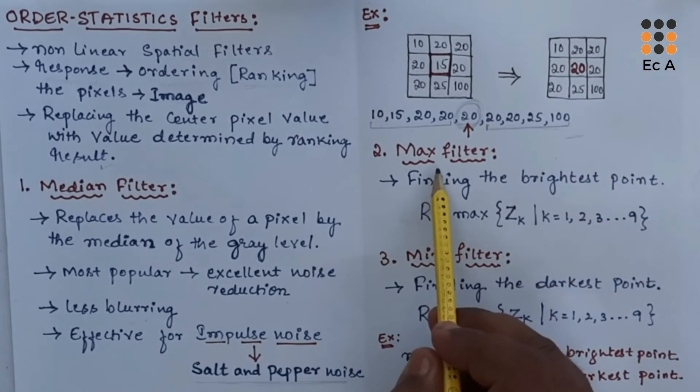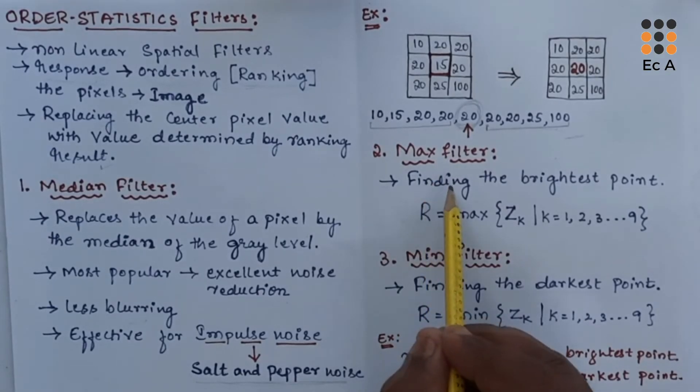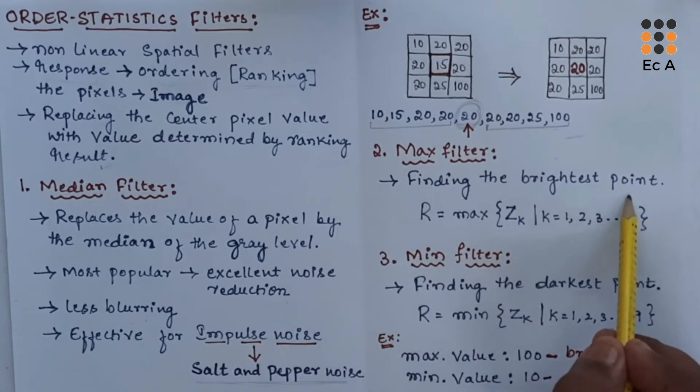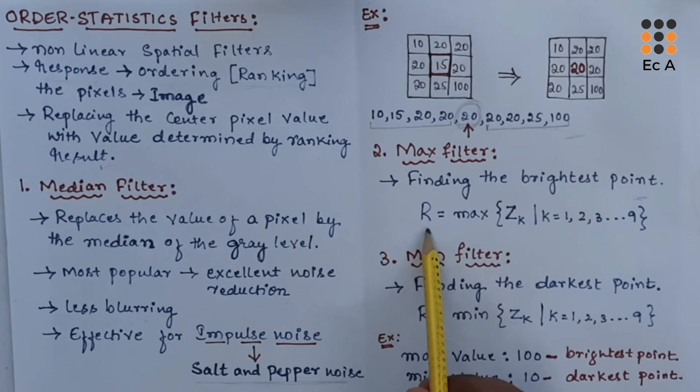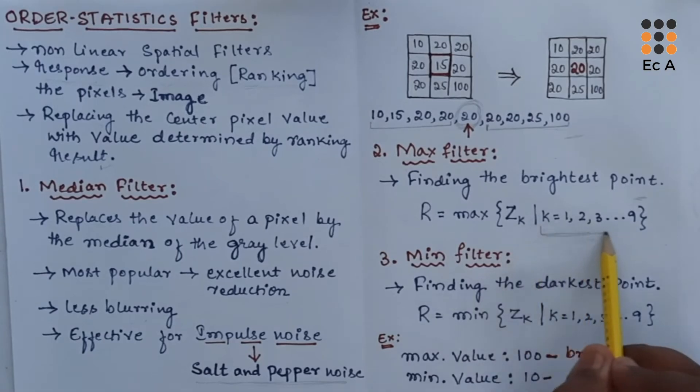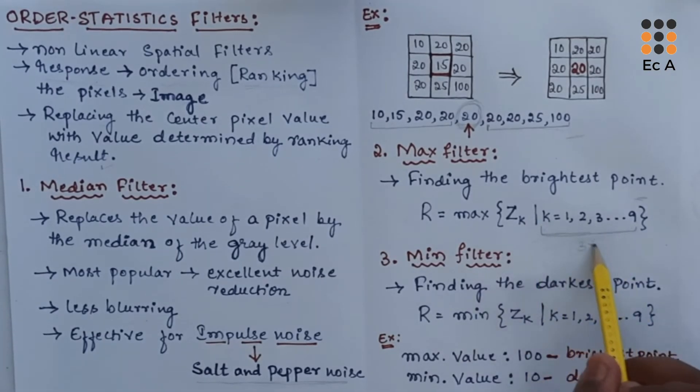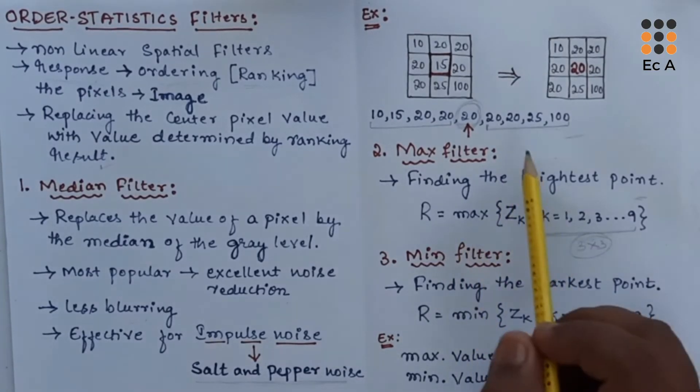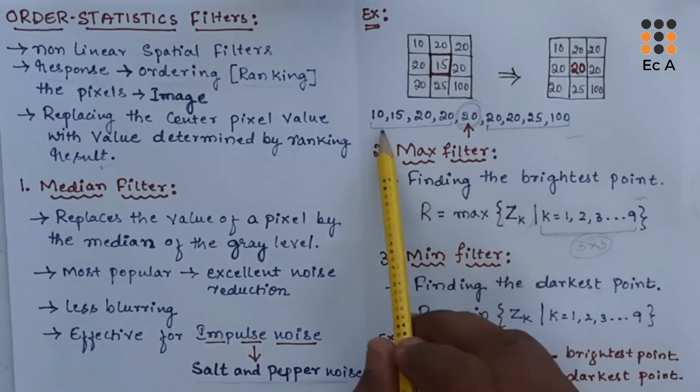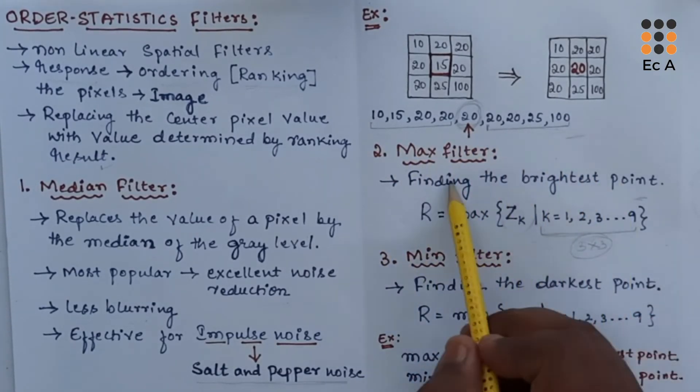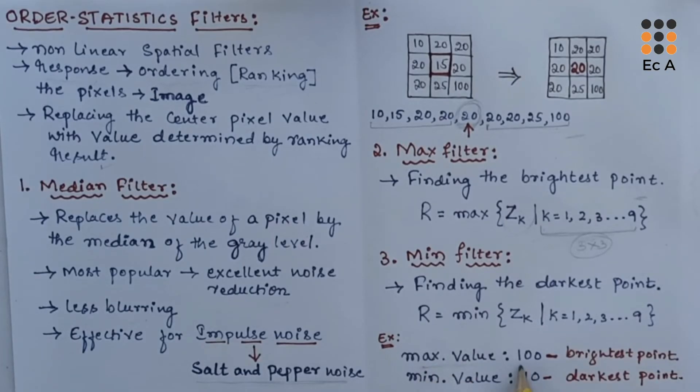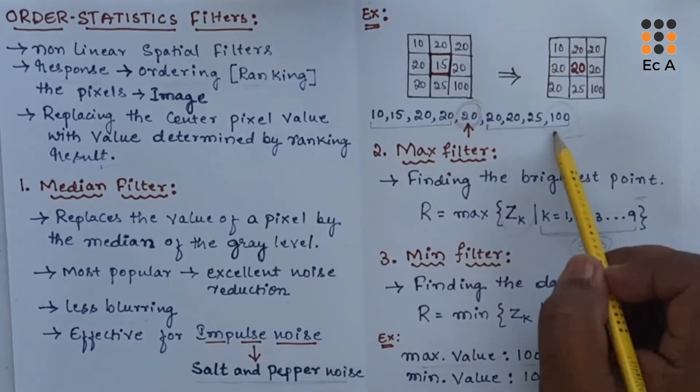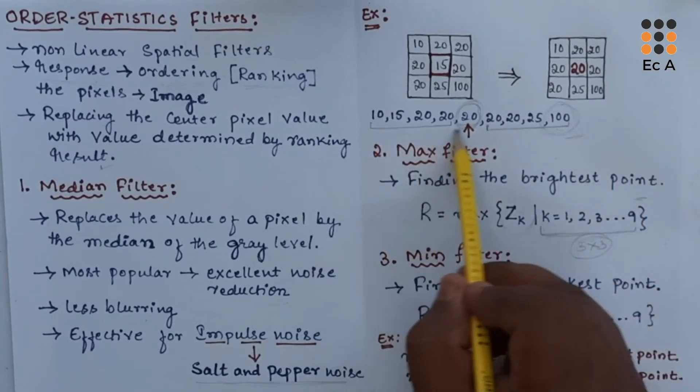The next type of filter is max filter. Max filter is very useful in finding the brightest point in an image. This can be represented as R, which is response of the filter, as maximum of ZK. Here K value is ranging from 1 to 9 if we consider 3 by 3 pixels. The output of this maximum filter will be 100 for this example because this is the maximum value in the available pixels. So this is the brightest point in the given image.